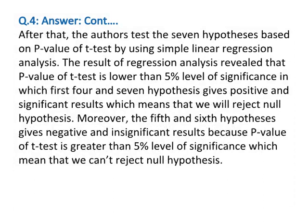After that, the authors test the seven hypotheses based on the p-value of a t-test using simple linear regression analysis. The results of regression analysis revealed that the p-value of the t-test is lower than the 5% level of significance, in which the first four and seventh hypotheses give positive and significant results, meaning we reject the null hypothesis. The fifth and sixth hypotheses give negative and insignificant results because the p-value is greater than the 5% level of significance.